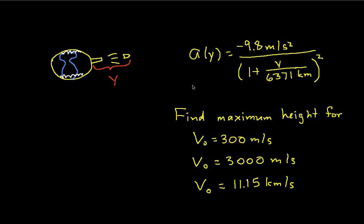So we know, basically, we have this expression that gives us the acceleration as a function of position, where, in this case, position is defined as the distance above the Earth's surface.